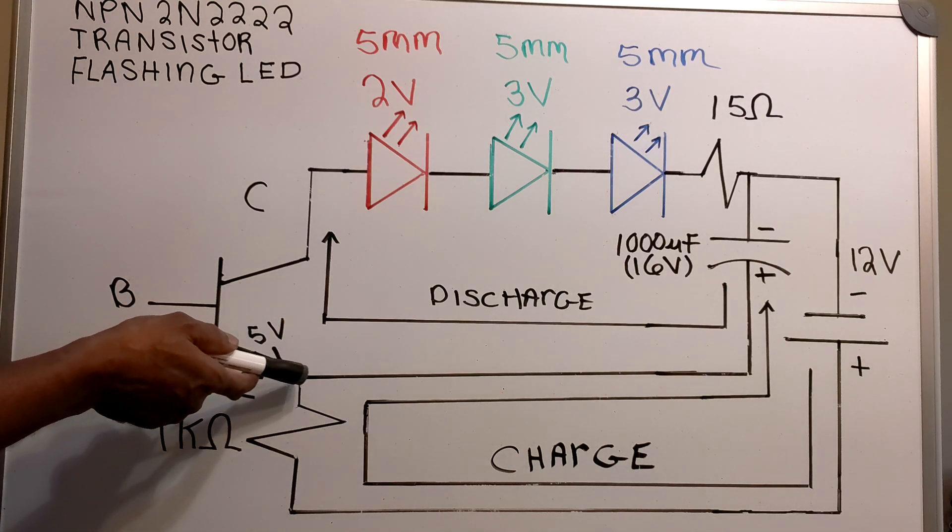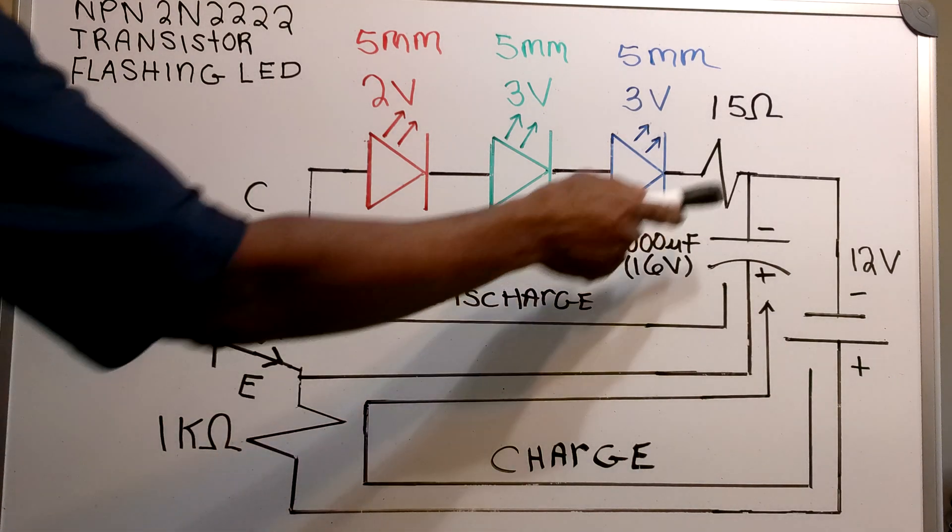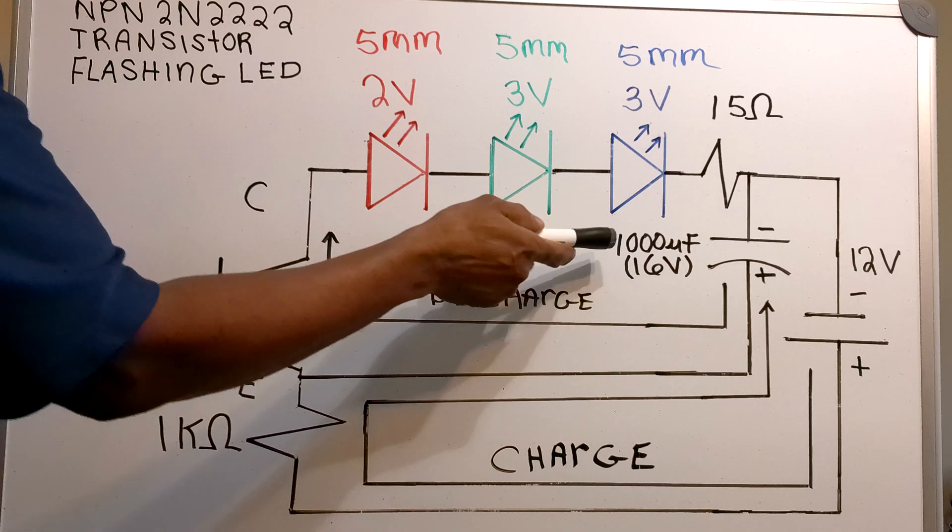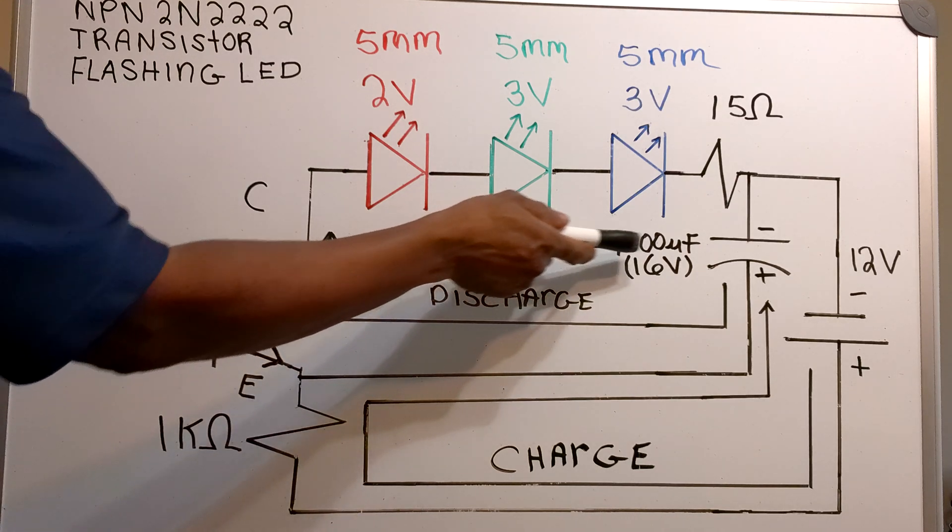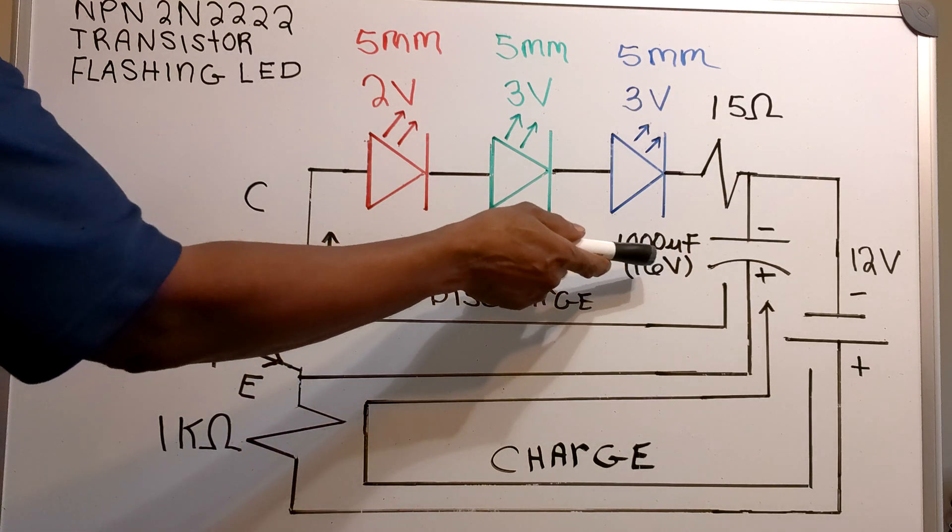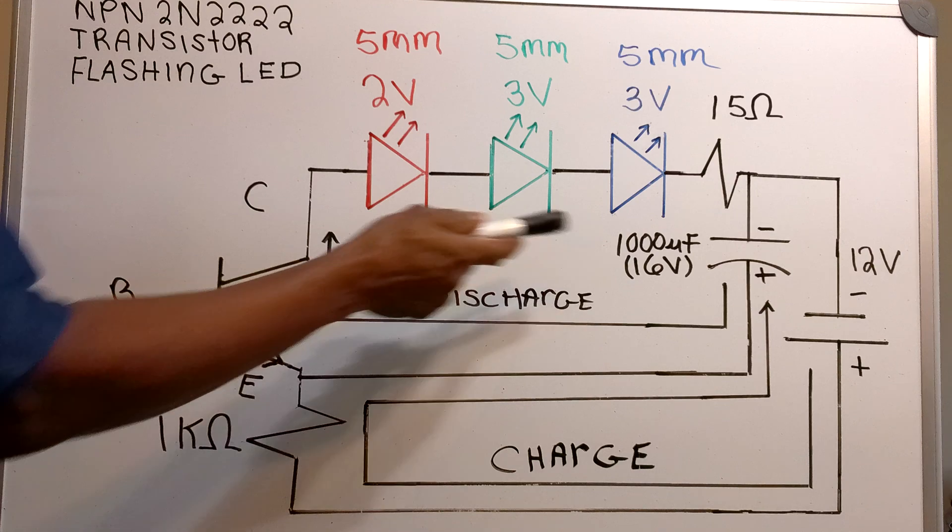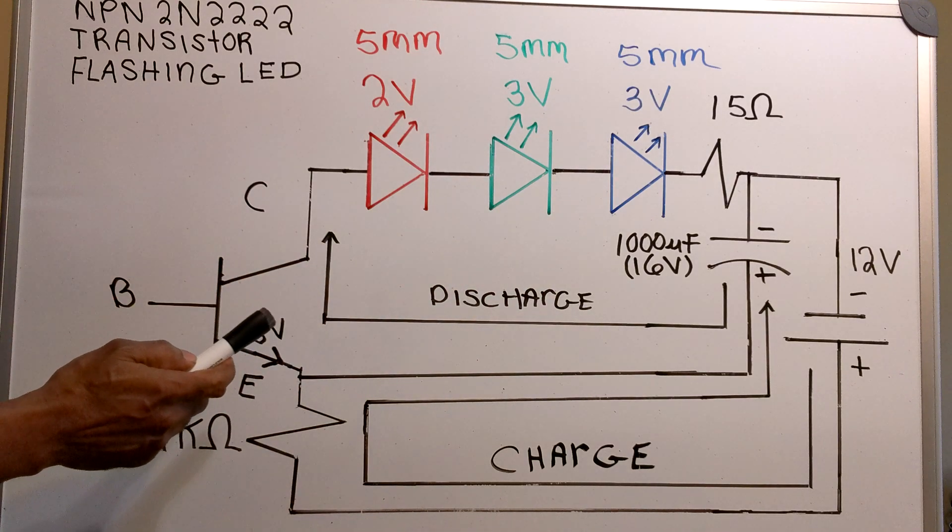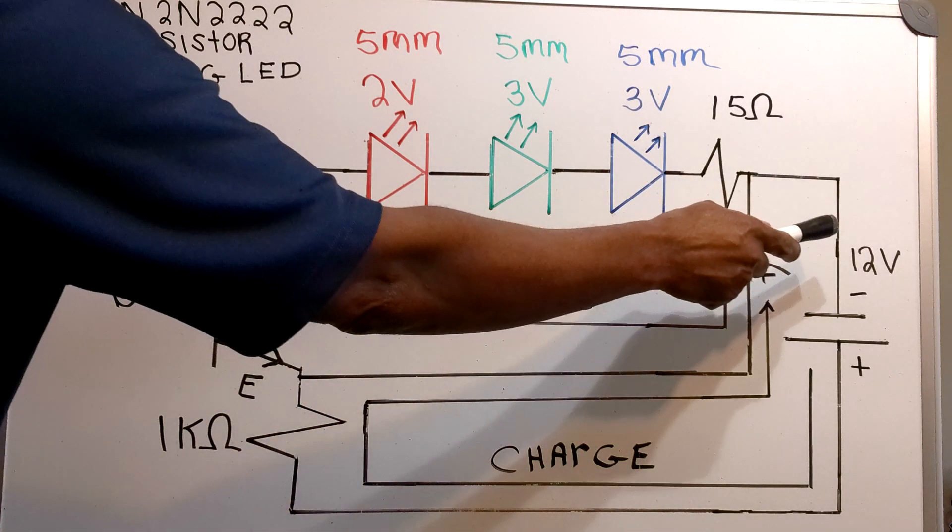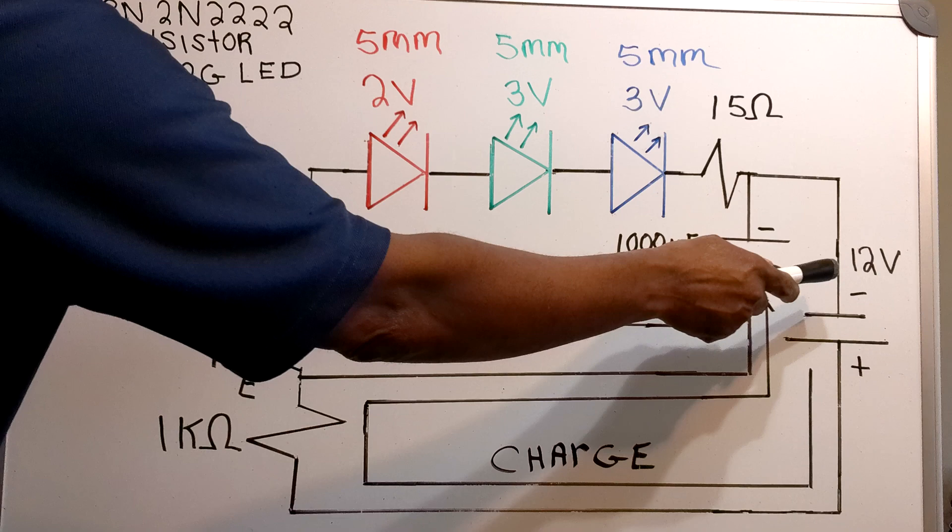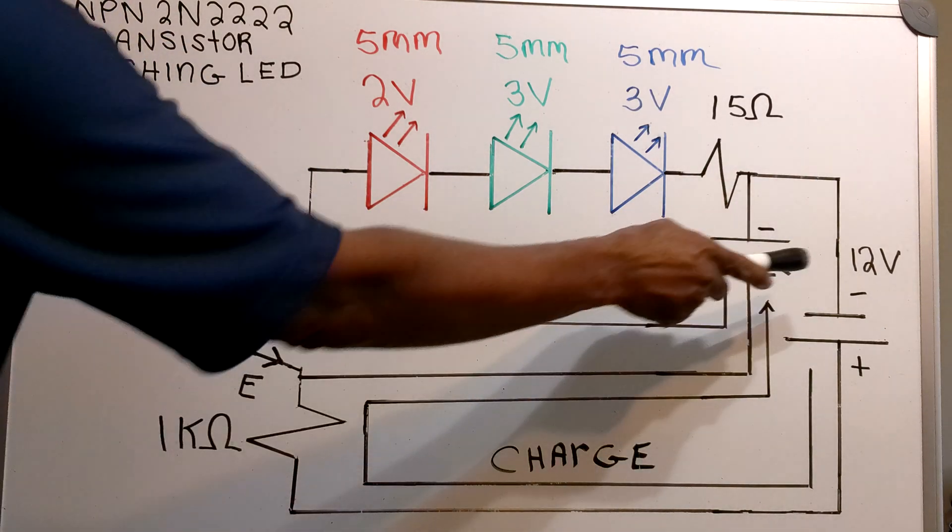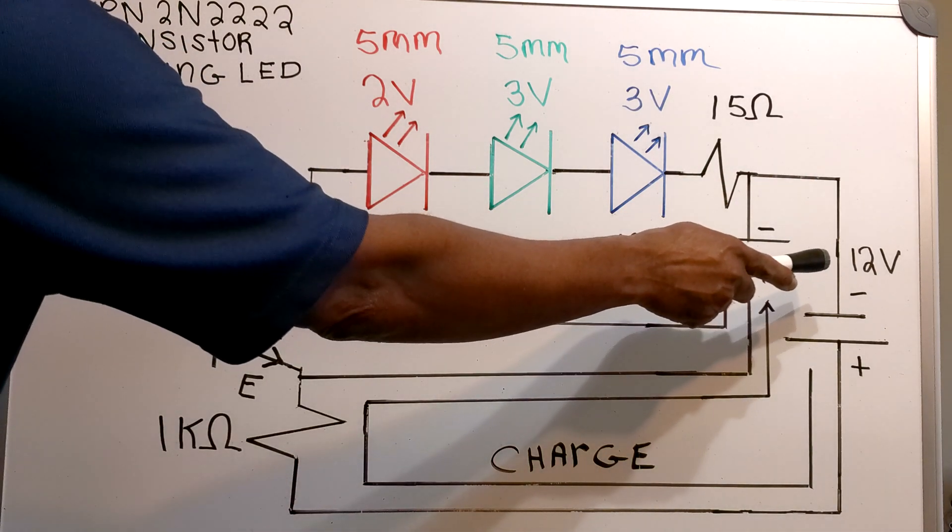Going from the emitter across the collector, I have a 1000 microfarad 16V capacitor, and across the entire transistor, I have a 12V DC supply.